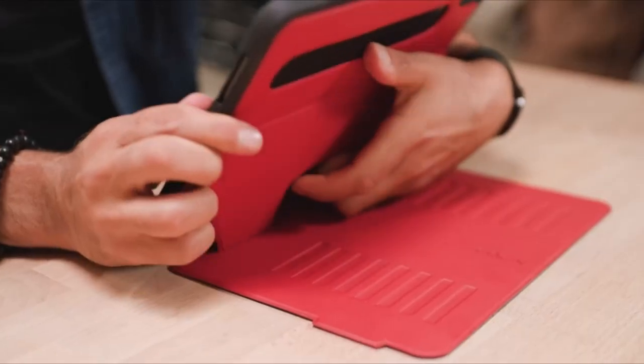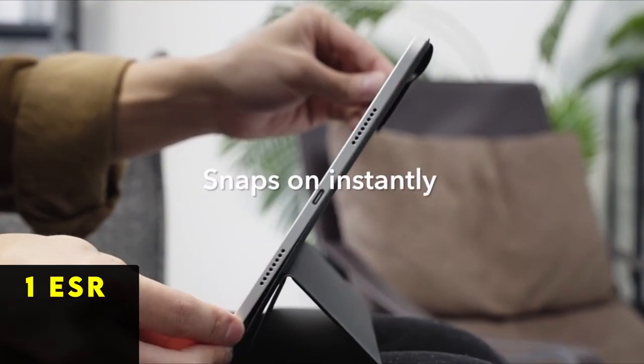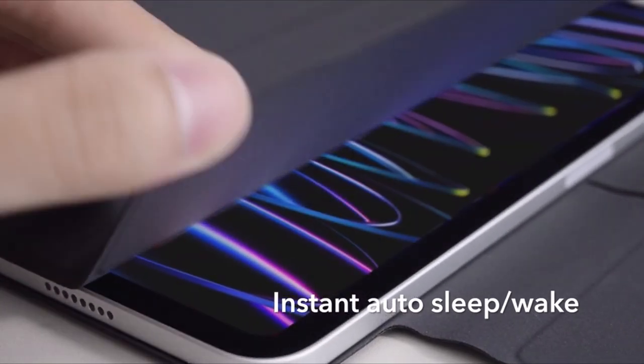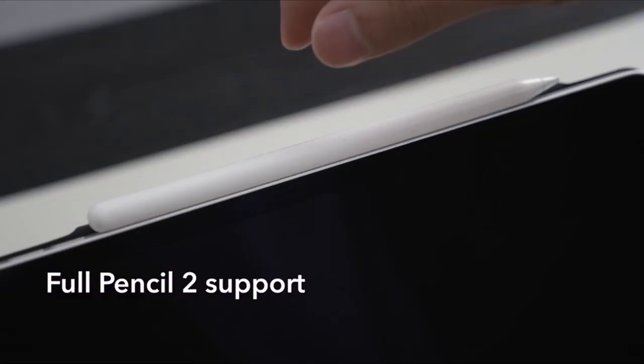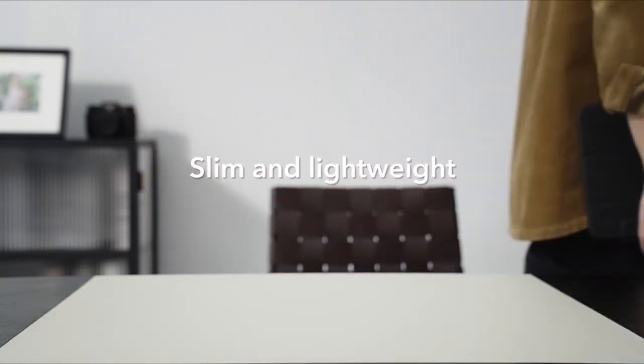Now moving to the last one is ESR. The ESR Rebound Magnetic Case offers a budget-friendly alternative to Apple's Smart Folio for iPad Pro, providing similar functionality at a fraction of the price. This case includes an Apple Pencil holder, making it a practical choice for users looking to cover their iPad Pro without breaking the bank. The front trifold cover supports sleep/wake mode and can be folded into two stand modes for viewing and writing.